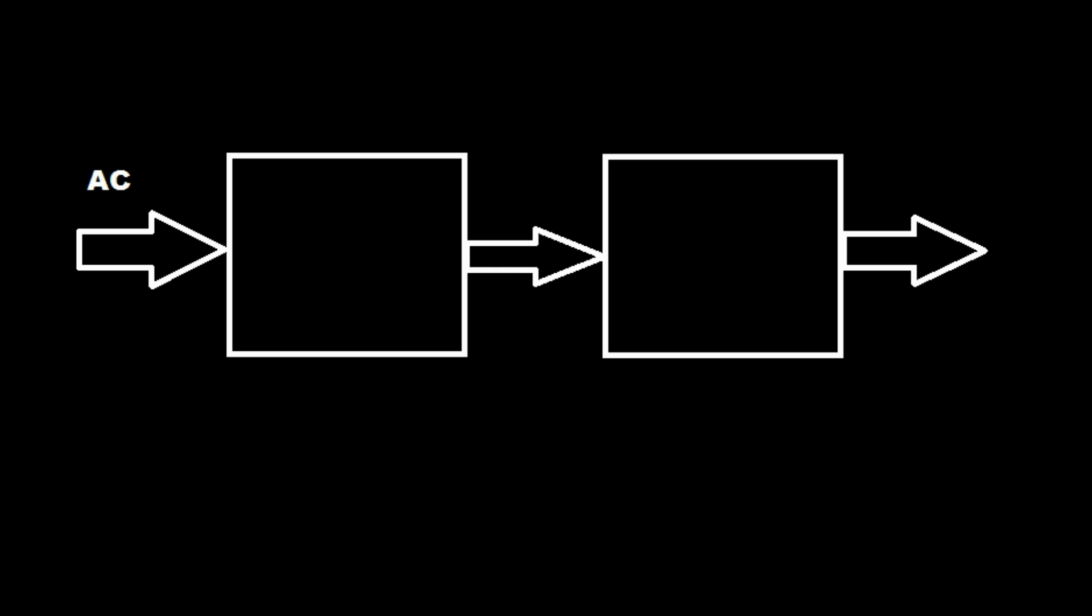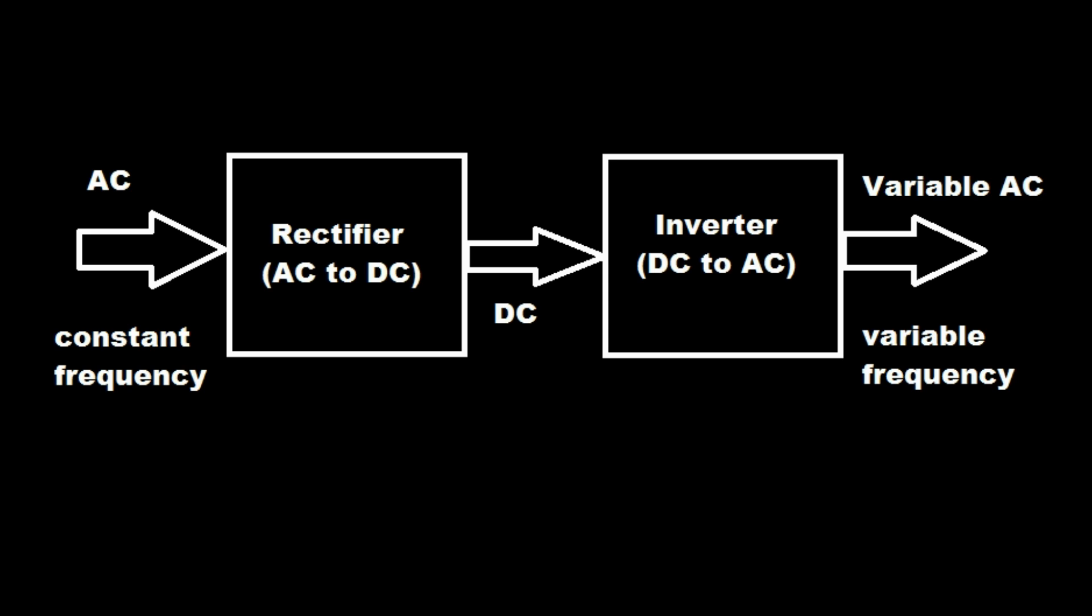Let's look at the basic concept of variable frequency drive. The input to the VFD is 3-phase AC with constant frequency which goes to the rectifier. Rectifier is a 6-set of diode bridge which converts AC to DC. Then DC goes to the inverter which is 6-set of IGBT and converts DC to variable AC and fed to 3-phase induction motor for varying speed.